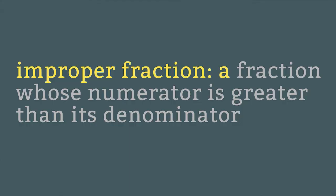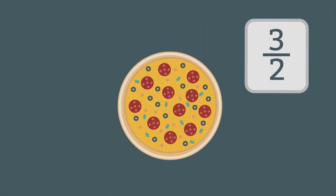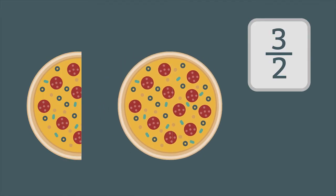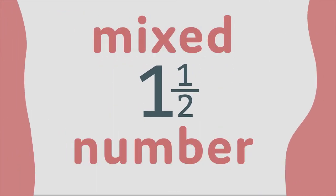An improper fraction is a fraction whose numerator is greater than its denominator. 3 halves is an example of an improper fraction. Here are 3 half pizzas. When 2 halves are put together, they make a whole pizza. 3 halves of pizza is the same as 1 and 1 half pizzas. 1 and 1 half is a mixed number.